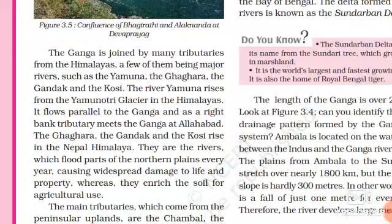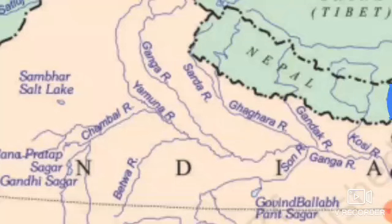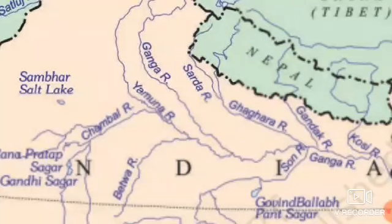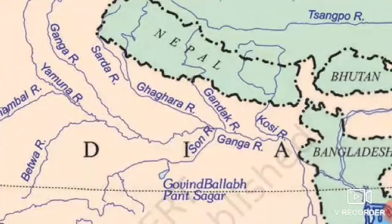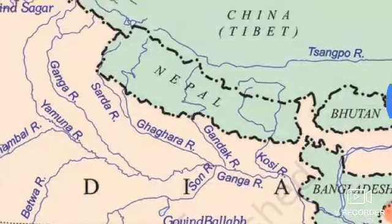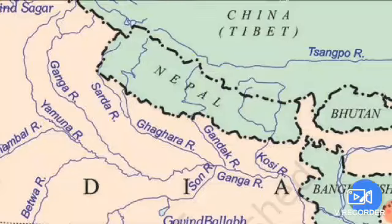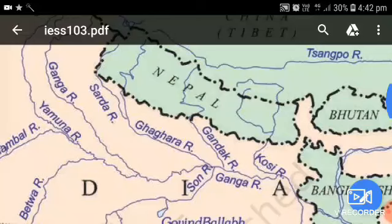If we look at the map again, this will show us. This is the river Yamuna. Ganga is the main river. Yamuna, Ghagra, Gandak, and Kosi are shown on the map. The Gandak and Kosi enter from Nepal and then join Ganga. The Ghagra also joins Ganga.